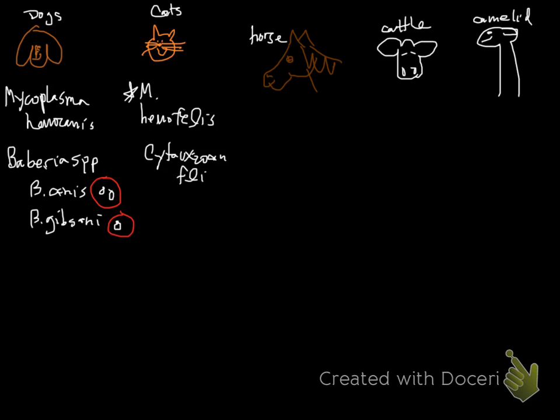The other intra-erythrocytic red cell parasite we see in cats is Cytauxzoon felis, and that doesn't actually cause anemia in the same way — it is a much worse disease. It actually causes a non-regenerative anemia because it crowds out the bone marrow, whereas the others cause regenerative anemias. We'll put that in parentheses because it's not really the same category.